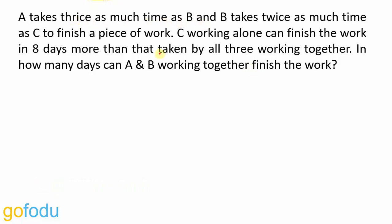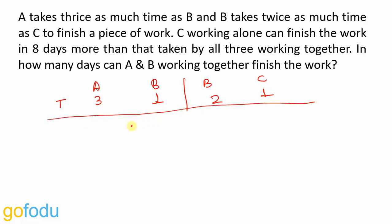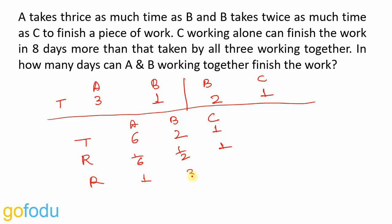A takes thrice as much time as B, and B takes thrice as much time as C. So combined ratio of time for A, B, C is 6 is to 2 is to 1. Since rate is inversely proportional to time, rates are in ratio 1/6 is to 1/2 is to 1. Multiplying by LCM 6, rates are in ratio 1 is to 3 is to 6.